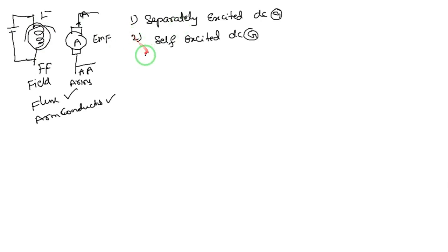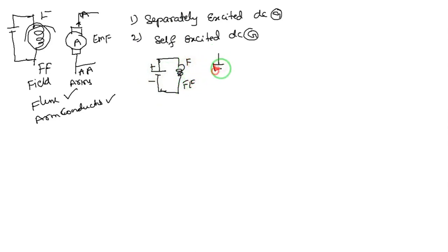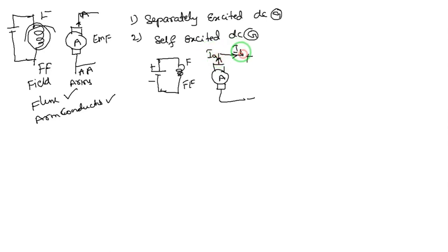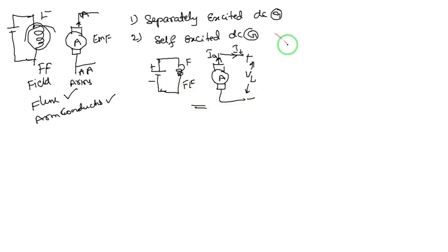For a separately excited generator, we give an external source — an external battery plus or minus — to the field winding, and the armature winding induces an EMF. The armature current passes through the armature winding to the terminal. This terminal current is also called the load current IL, and the load voltage is VL. This is the diagram for the separately excited DC generator.